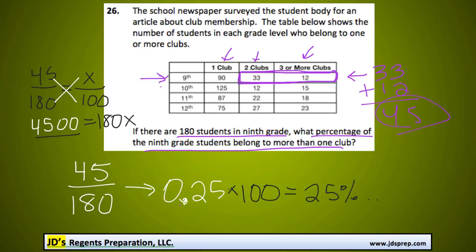And then you would divide by 180, like that. And you'd get x is equal to 4,500 divided by 180, which would get you the same answer, 25%. So there are a couple different methods of getting to this answer.